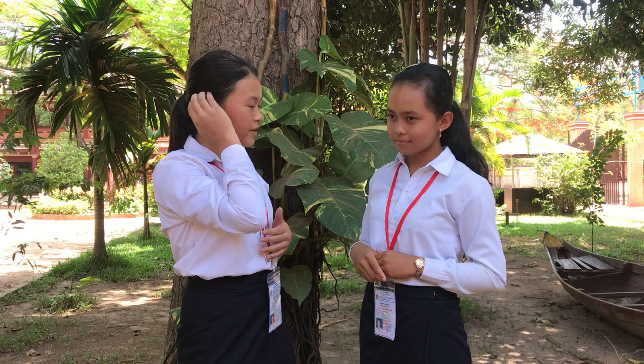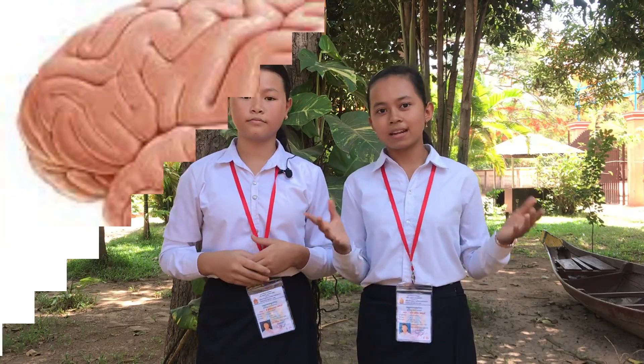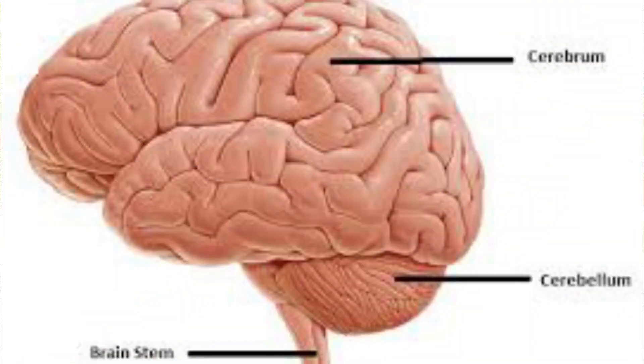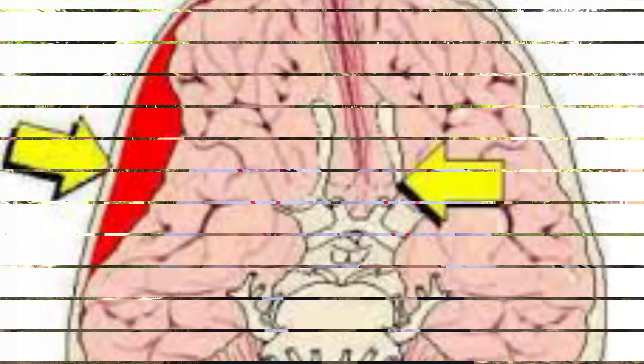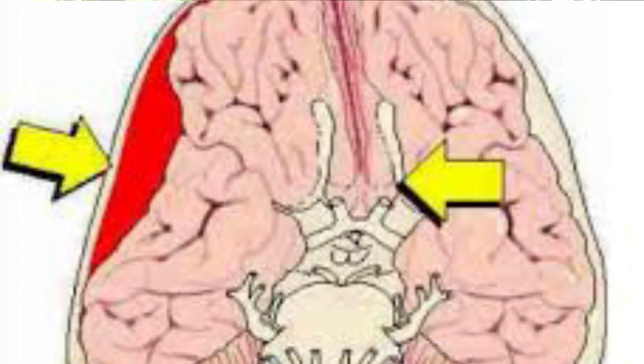Do you know what the topic means? Stroke is a kind of disease that can be a serious condition, which is now becoming a worldwide concern among the elderly. The disease is caused by two major causes: 80–85% from brain obstruction and 15–20% from stroke bleeding.